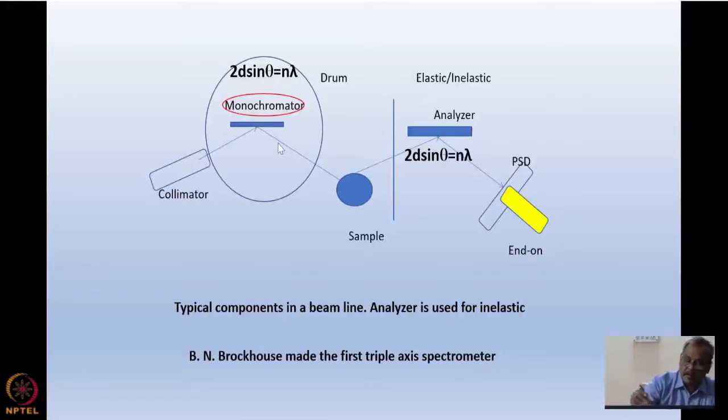This triple-axis beam spectrometer was designed by B.N. Brockhaus. You can rotate the monochromator, and the whole spectrometer rotates around it, including the sample, the analyzer, and the detector. By rotating the monochromator, you can choose a different lambda. The sample is here and scatters the beam.